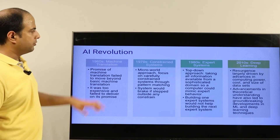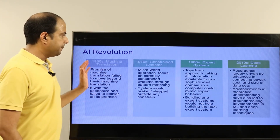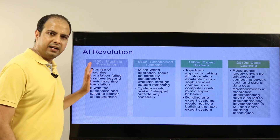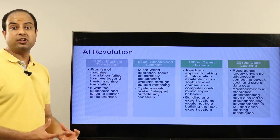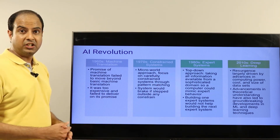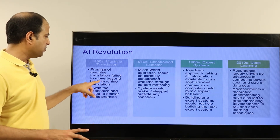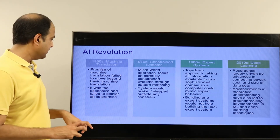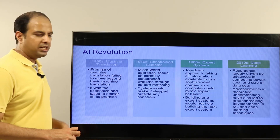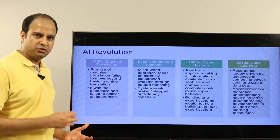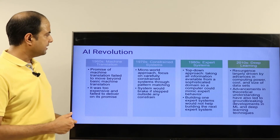The machine learning revolution has happened in stages. Work on machine translation already started in the 1960s, but the promise of machine translation failed to move beyond basic translation — it was too expensive, there wasn't enough labeled data, and it failed to deliver on its promise at that point.